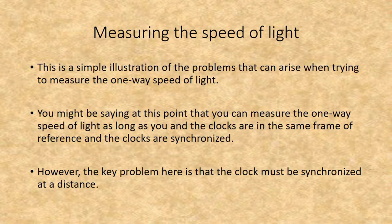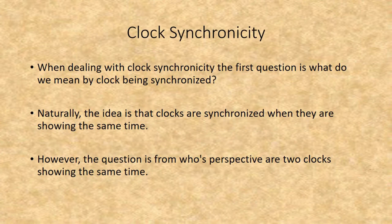This is just a simple illustration of the problems that arise when trying to measure the one-way speed of light. You might say that you can measure it as long as you and the clocks are in the same frame of reference and the clocks are synchronized. However, the key problem is that the clocks must be synchronized at a distance. When dealing with clock synchrony, the first question is: what do we mean by clocks being synchronized? The idea is that clocks are synchronized when they are showing the same time — but from whose perspective are two clocks showing the same time?